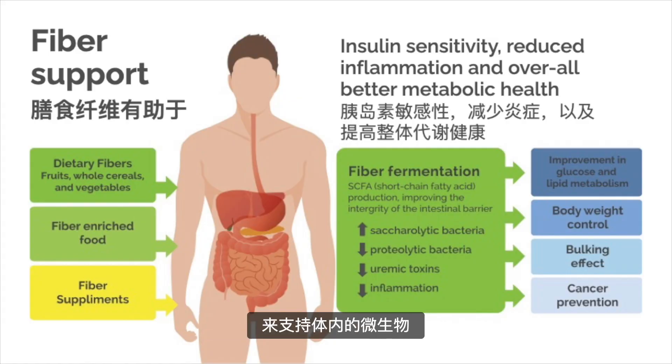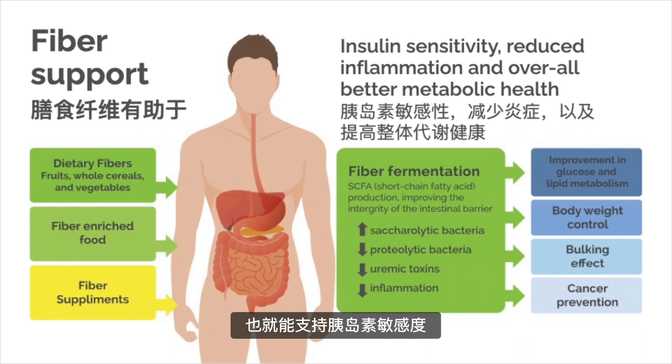Dietary components remaining undigested at the end of the small intestine are routinely fermented within the large intestine by the gut microbiome. A fascinating study demonstrated that the transfer of lean microbiota from lean organisms to obese organisms altered fat gain, even when controlling for energy intake. In other words, supporting our microbiome with adequate regular consumption of dietary fiber can shift microbiota populations toward lean microbiota and thereby support insulin sensitivity, reduced inflammation, and overall better metabolic health.